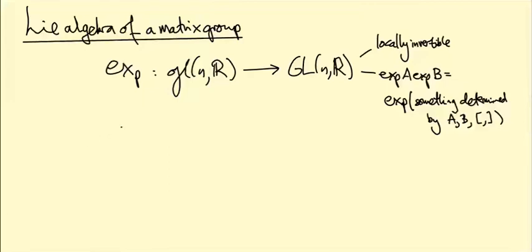So what we've done so far is to define an exponential map that takes any matrix in little GL(n,R) and returns for us an invertible matrix in big GL(n,R). And this map has some nice properties.